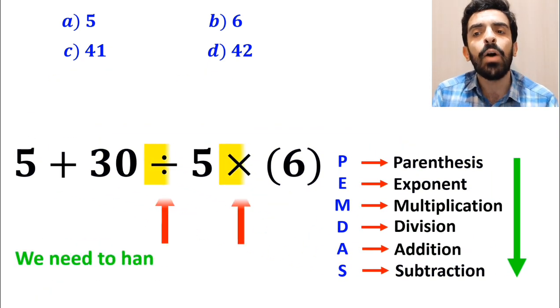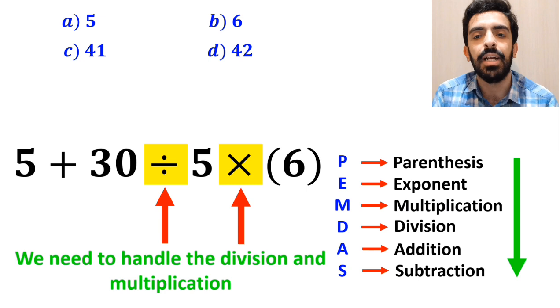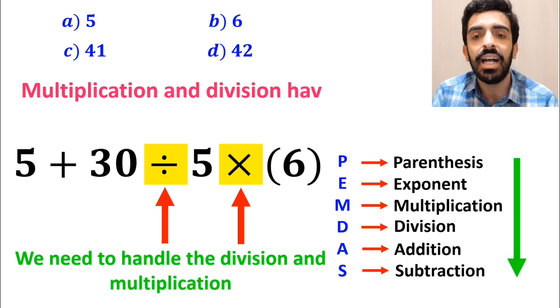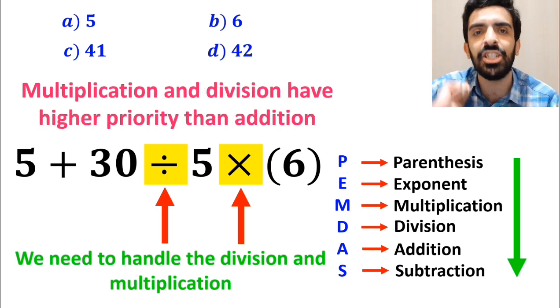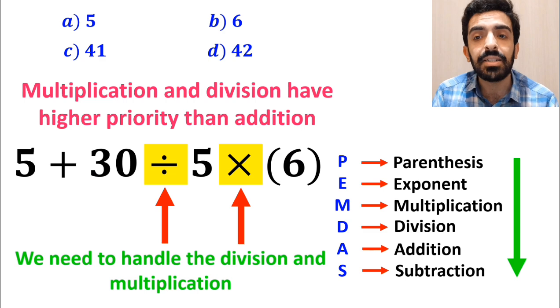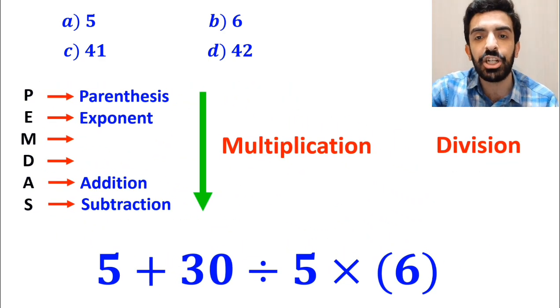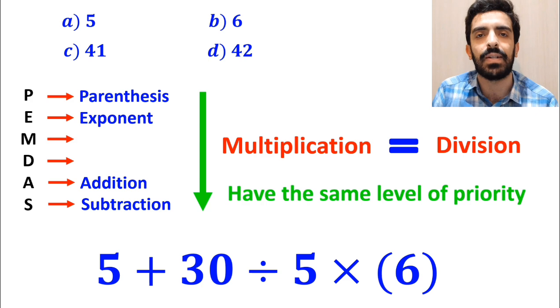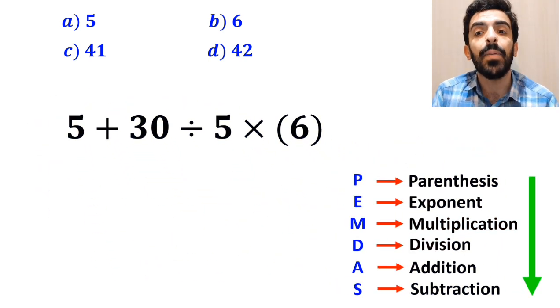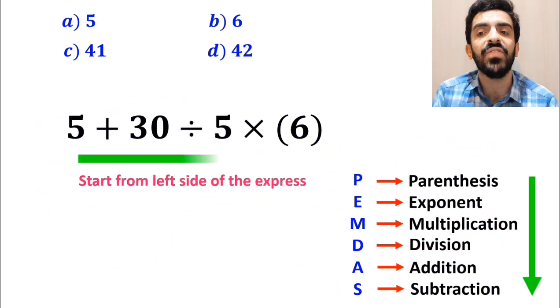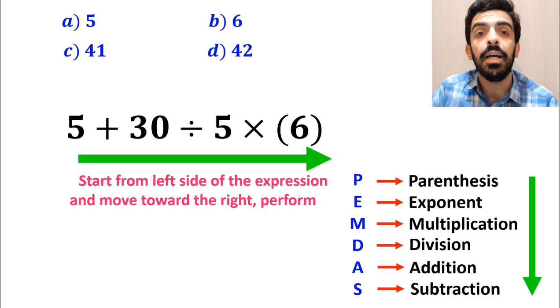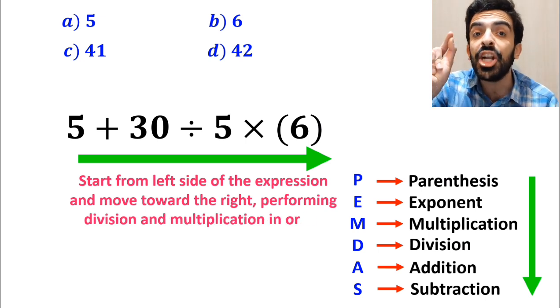And the next step, we need to handle the division and multiplication because multiplication and division have a higher priority than addition. However, it's very important to note that in the PEMDAS rule, multiplication and division have the same level of priority. In this case, the best thing to do is to start from the left side of the expression and move toward the right, performing division and multiplication in order.